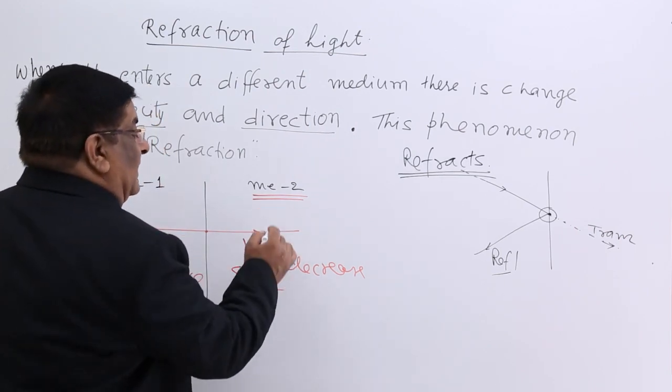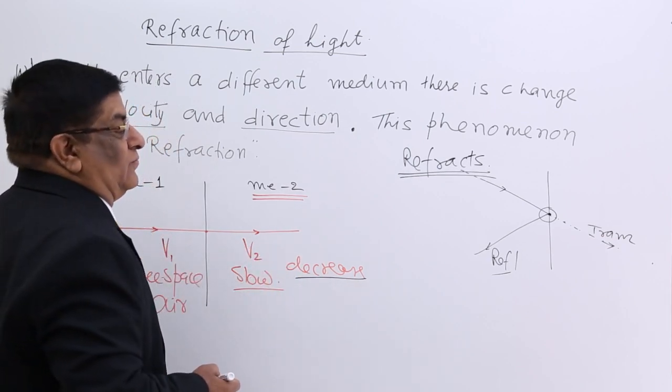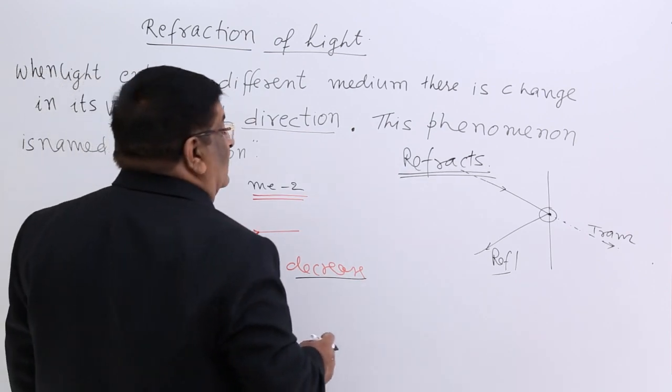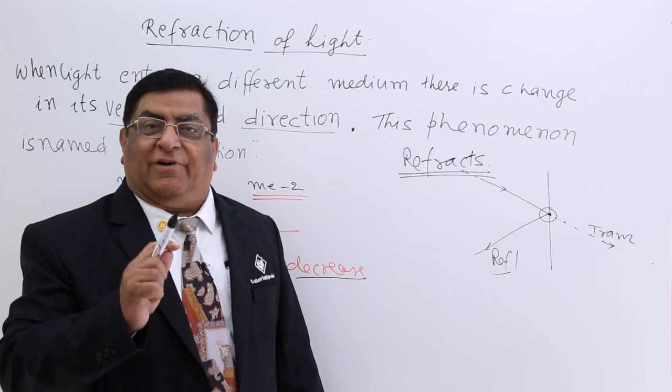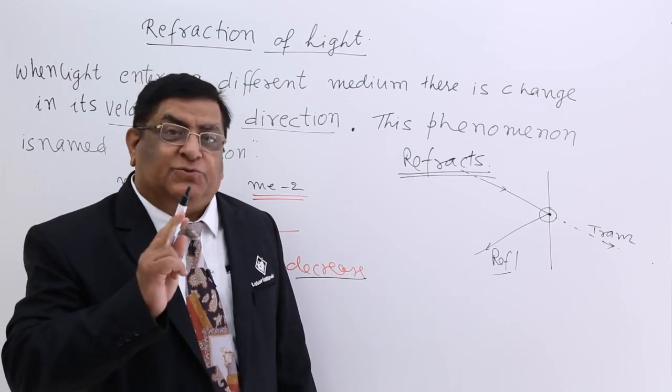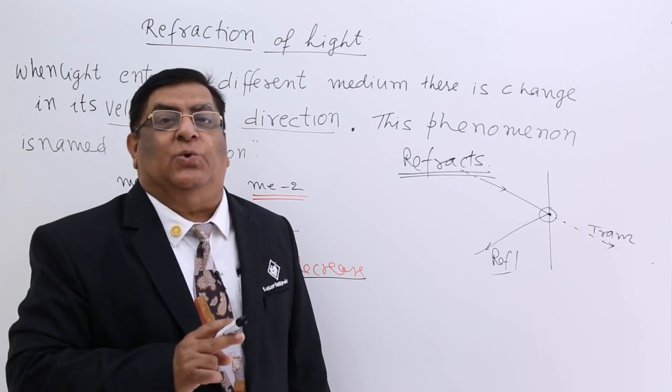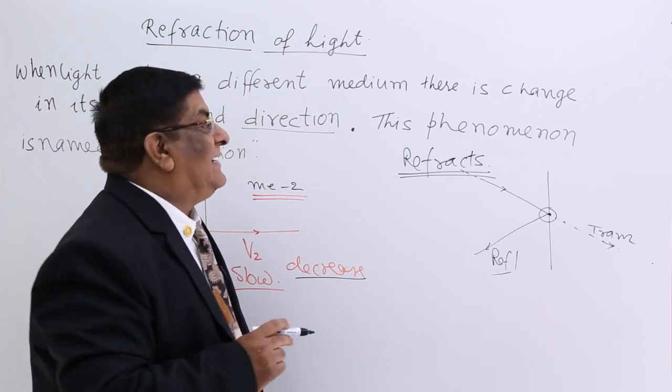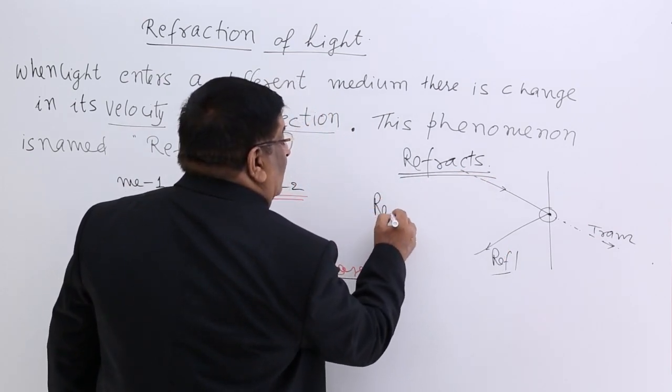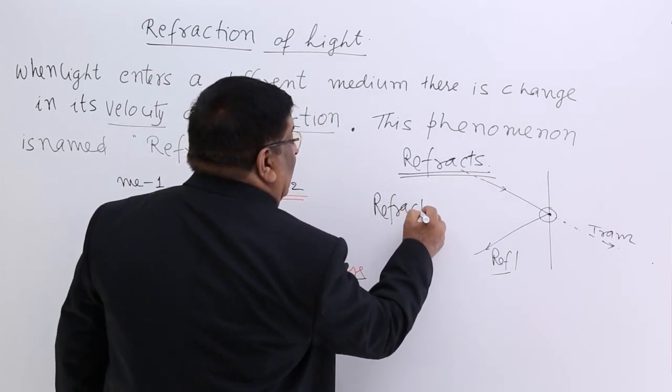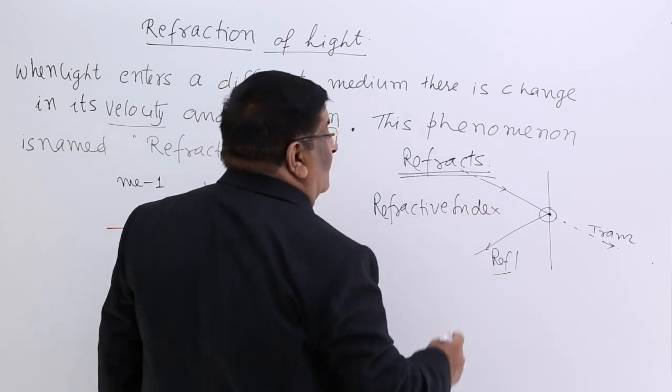So there are different mediums which are decreasing the velocity in different amounts. And that measurement, the strength of a medium to decrease the velocity, the strength of the medium to decrease the velocity, is known as index. And what index? Refractive index.